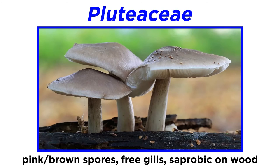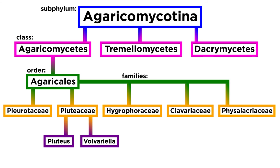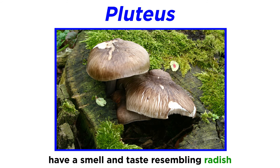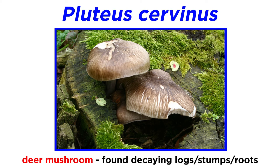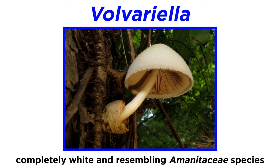A similar family genetically to Pleurotaceae is Pluteaceae, containing pink to brown spored mushrooms with free gills and saprobic on wood. Although mushrooms in the family Entolomataceae also have pink spores, under a microscope these mushrooms have smooth and round spores compared to Entolomataceae's ridged spores. Generally, Pluteaceae is split into two genera, Pleurotus and Volveriella. Pleurotus mushrooms are known to have a smell and taste resembling radish. A classic species is Pleurotus cervinus, commonly called the deer mushroom, found decaying logs, tree stumps, and roots. Volveriella species are not common and are generally entirely white, resembling species in the Amanitaceae family because of the sac-like structure at the base of the stipe called a vulva. We will discuss the Amanitaceae family in depth in the next tutorial.